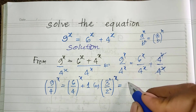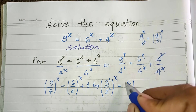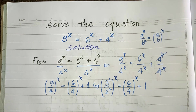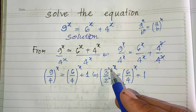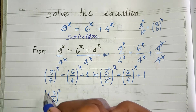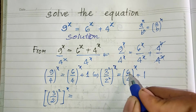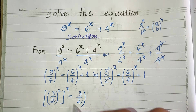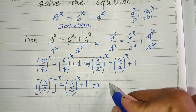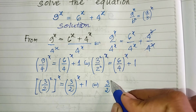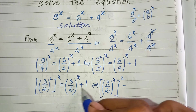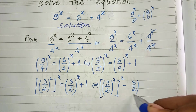This equals (6/4)^x plus 1. I also use the formula: 6/4 simplifies to 3/2. So we get (3/2)^(2x) equals (3/2)^x plus 1. Rearranging, this can be written as (3/2)^(2x) minus (3/2)^x minus 1 equals zero.